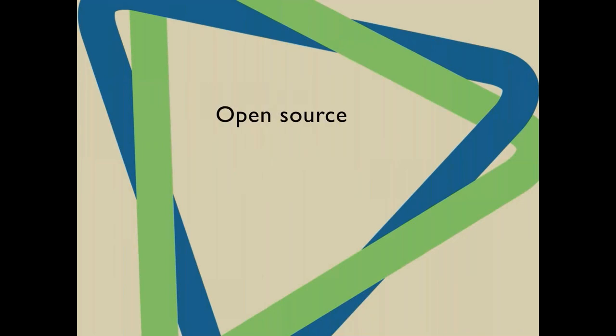It is an open-source piece of technology, meaning developers have full access to the underlying code. This allows the CiviCRM community to contribute back to the project — creating new features, fixing bugs, and addressing security issues. Often with a software-as-a-service solution, if you find a bug or request a new feature, it's up to the owner to decide when it gets fixed — you could wait months or even years. With hundreds or thousands of people working together in an open-source community, somebody may have already developed that feature, or something close enough that you can customize yourself.